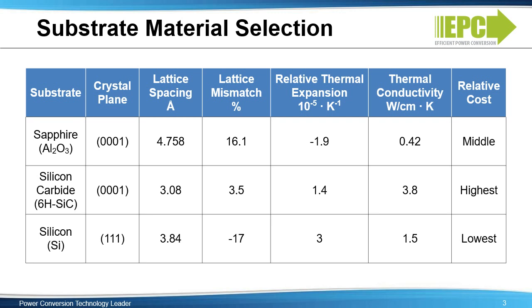Silicon is used for devices in more cost-sensitive switching power conversion applications, such as DC-to-DC conversion, AC-to-DC conversion, Class-D audio amplifiers, and motion control.